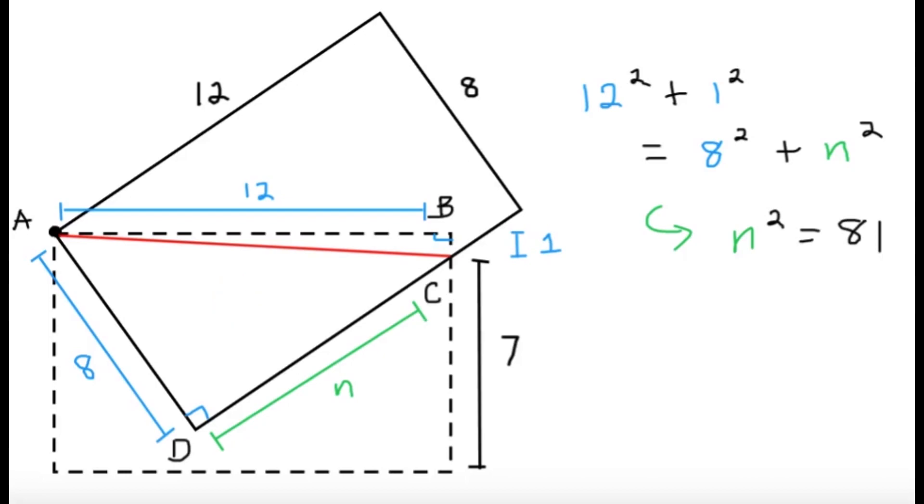And we can do it via an application of the Pythagorean theorem because we know that 12 squared plus 1 squared, that's going to equal AC squared via the Pythagorean theorem. And also AD squared, so this 8 squared plus this n squared, that's also going to equal AC squared. Well since both of them equal AC squared, I should have the equation 12 squared plus 1 squared equals 8 squared plus n squared.